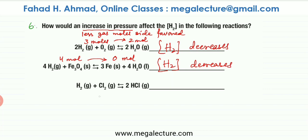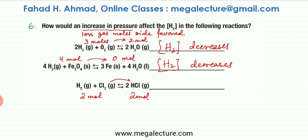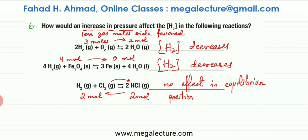Then in the last reaction, when you increase pressure, on one side there are two moles of gas, and on the other side there are also two moles of gas — H2 and Cl2 in the reactants, and two HCl in the products, all gases. So both sides have equal gas moles. When you increase pressure, there is no less gas mole side, so there is no effect on the equilibrium position. No forward or backward reaction would be favored in this case.